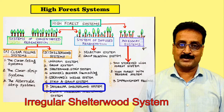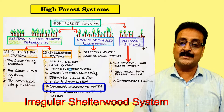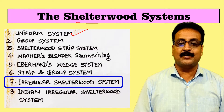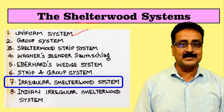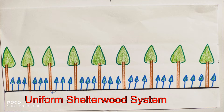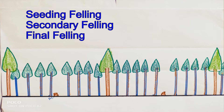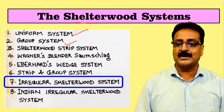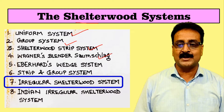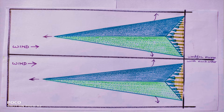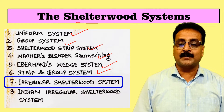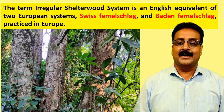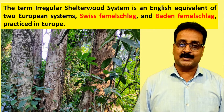In this lecture we study the irregular shelter wood system. In the uniform system we had seeding felling, secondary felling, and final felling. We also covered the group system, shelter wood strip system, Wagner's blender, Sam's log, Ever-heard wedge, and strip and group systems in previous lectures. Now we focus on the irregular shelter wood system.